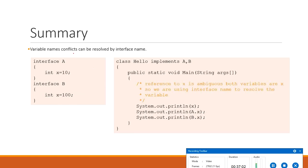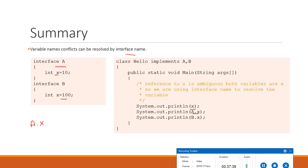Variable name conflicts can be resolved using the interface name. For example, if interface A and interface B both have a variable named x, this can be resolved because interface variables can be referred to with the interface name: A.x refers to interface A's variable and B.x refers to interface B's variable. Using just x would be ambiguous, so we use the interface name prefix to resolve this.